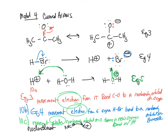Curved arrows go from the electron source to where they are going — always from nucleophile to electrophile. The Lewis acid-base definition makes sense here because we're tracking electron flow. However, for pKa calculations, use Brønsted-Lowry definitions. Additional problems 14 and 15 are due for participation points — make sure you draw all structures, curved arrows, and pKa values.